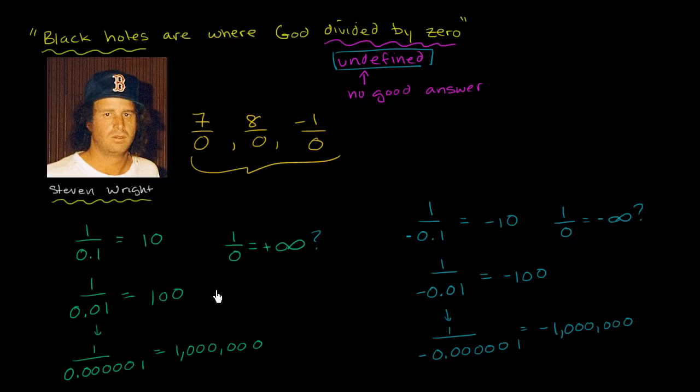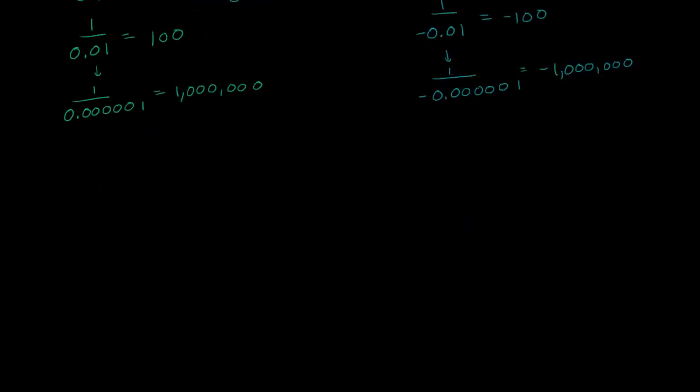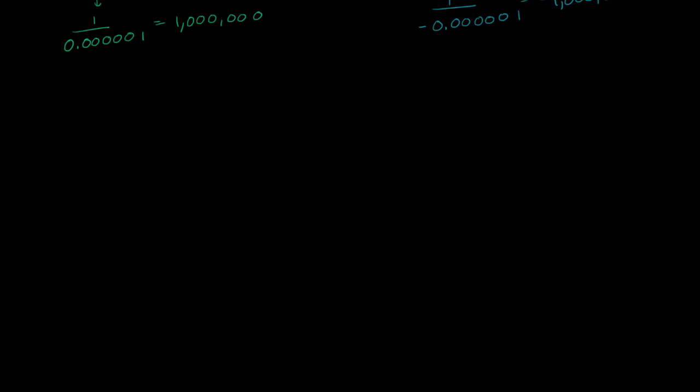In the last video, we saw why, when we take any non-zero number divided by 0, mathematicians have left that as being undefined. But it might have raised a question in your brain. What about 0 divided by 0? Isn't there an argument why that could be defined? So we're going to think about 0 divided by 0.